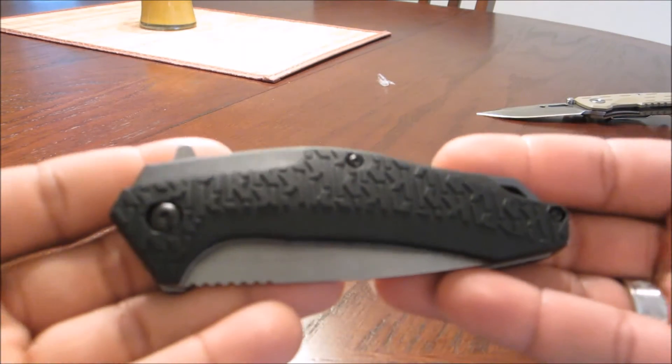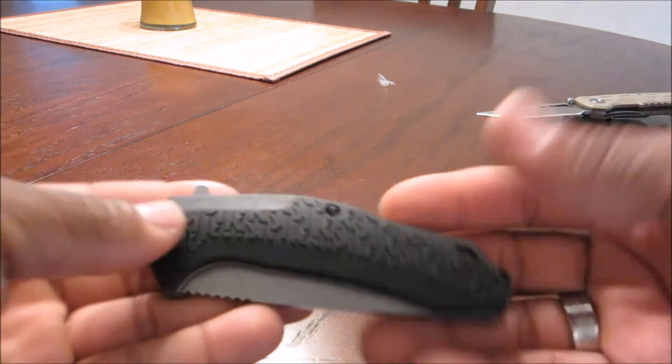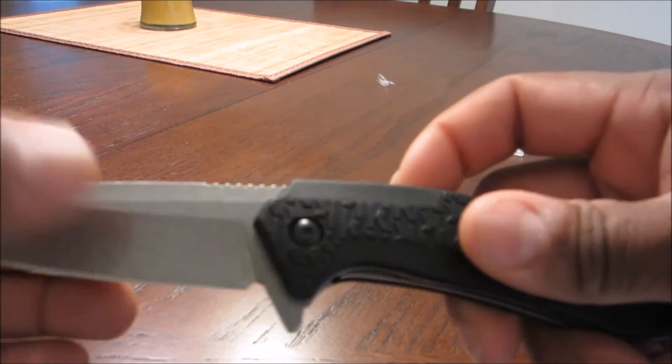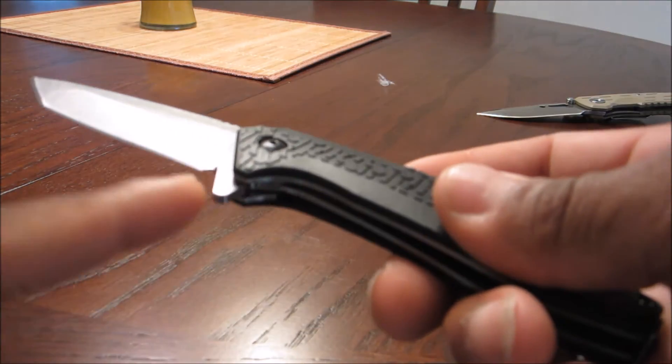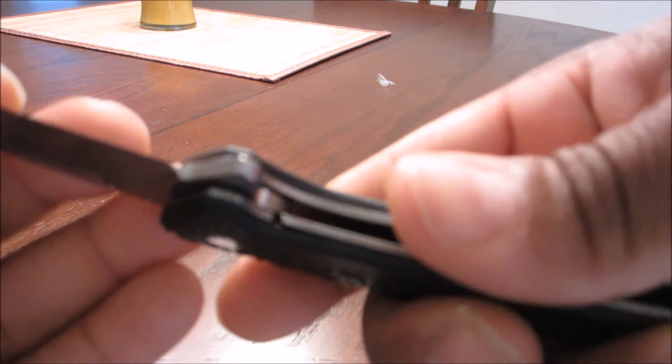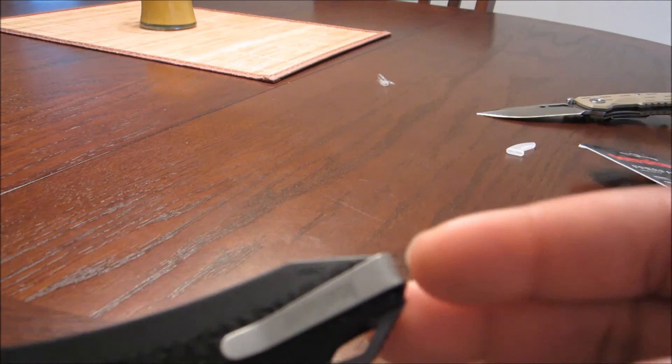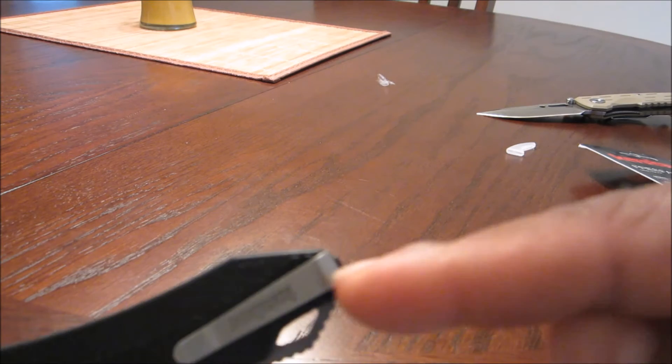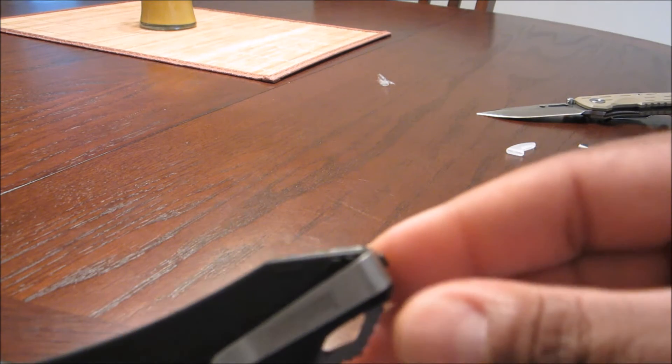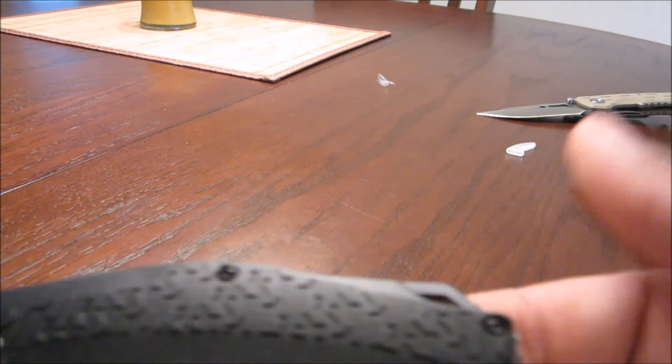You got a flipper here on the back, or right here. You got a nice little steel liner lock. You got a reversible deep carry clip. If you notice, the clip is pretty small, which is going to allow you to carry it really low in your pocket. And again, this is reversible.